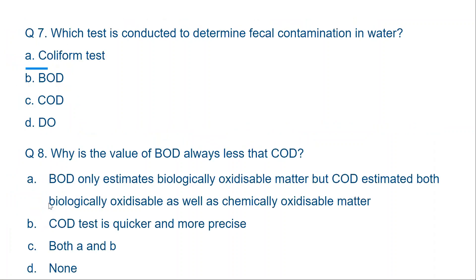Question seven: What test is conducted to determine fecal contamination in water? The options are: A) coliform test, B) BOD test, C) COD test, or D) DO test. The correct answer is the coliform test. Please remember: the coliform test is the biological test used to detect fecal contamination in water.